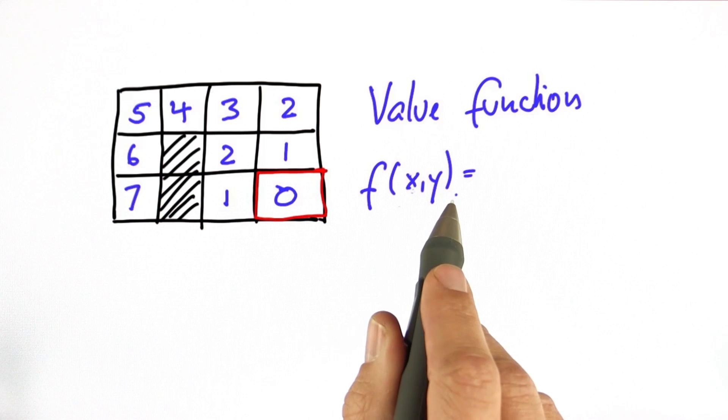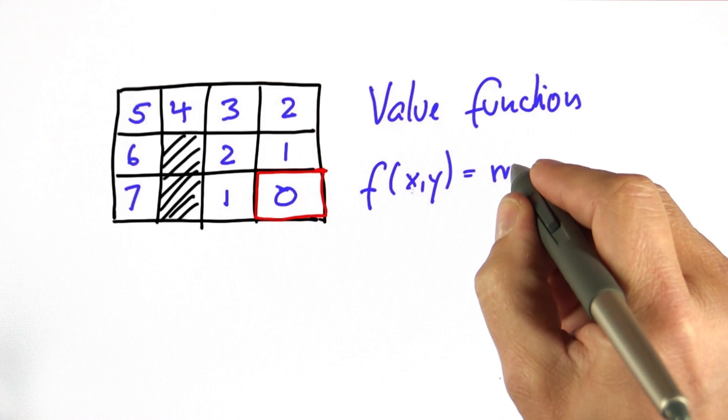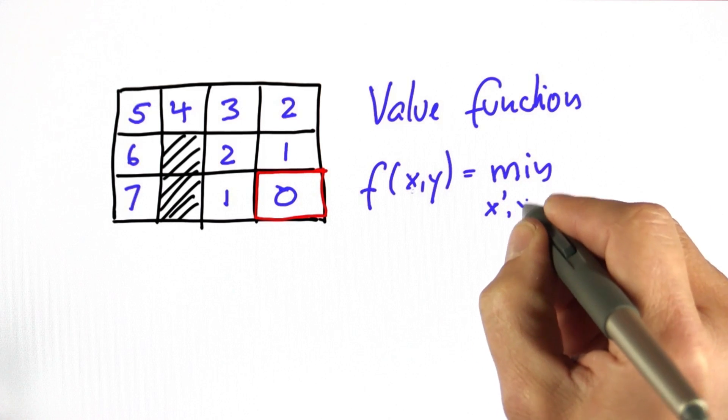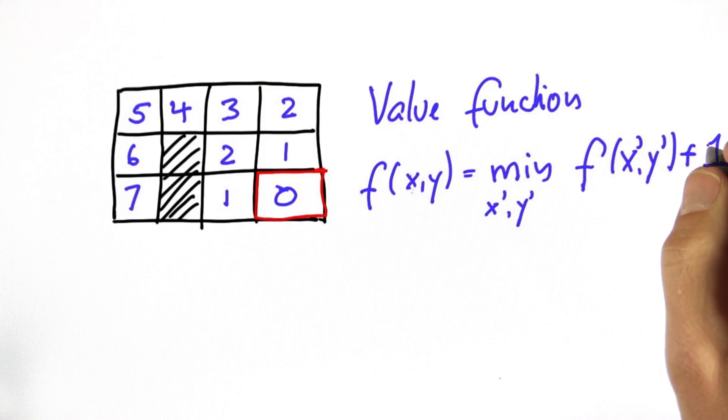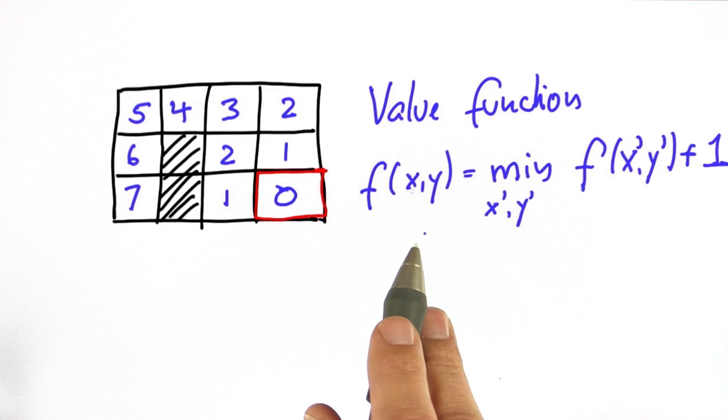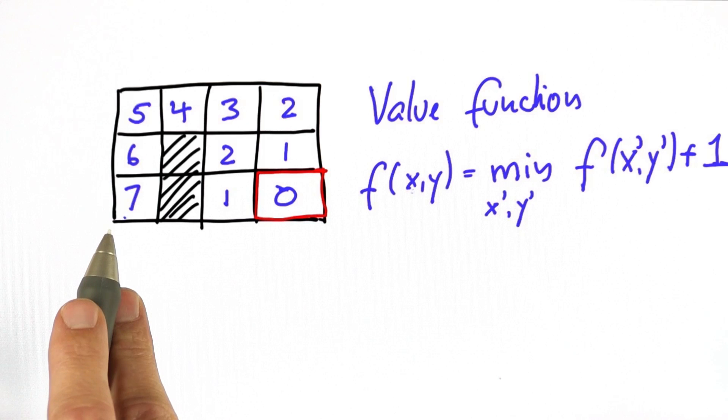This is recursively calculated by taking the optimal neighbor, x prime, y prime, considering its value, and by adding the cost it takes to get there, which in our example will be plus 1. By applying this update equation recursively, we can attain this value function over here.